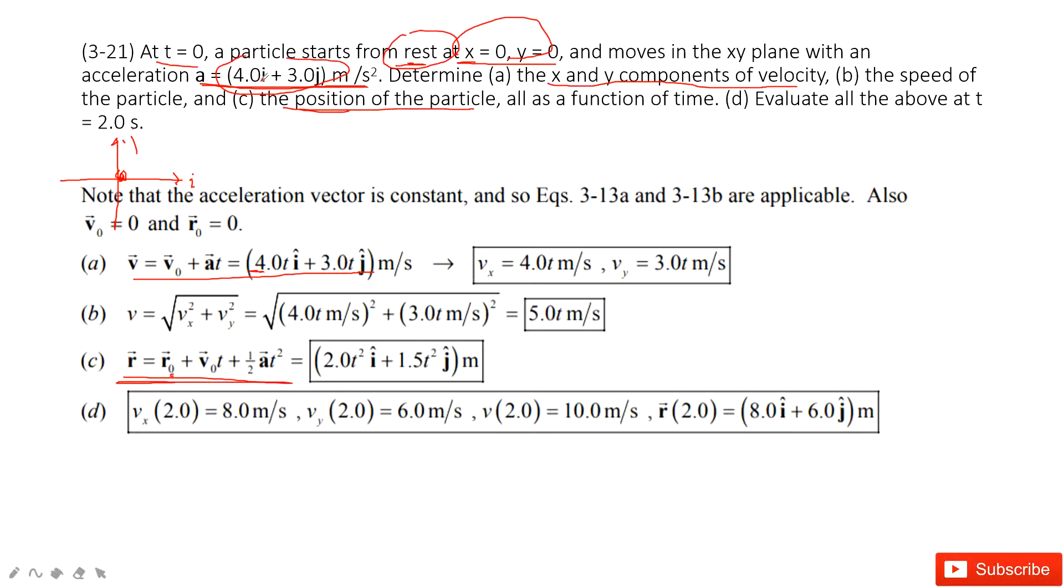Acceleration a is in two components, i component and j component. It's 2t squared and 1.5t squared in i component and j component.